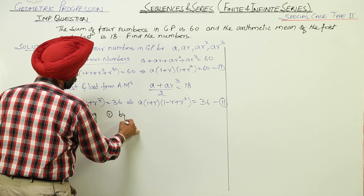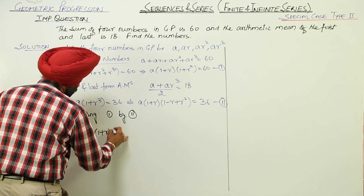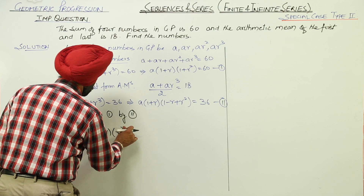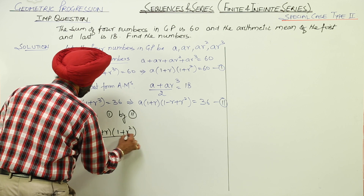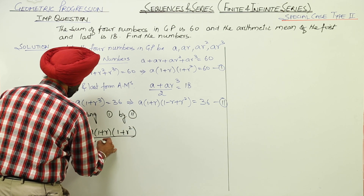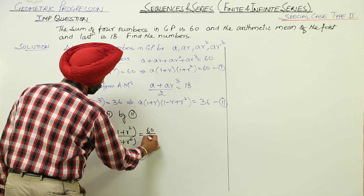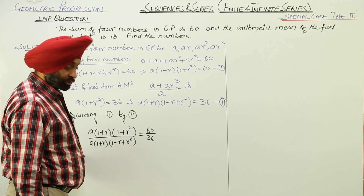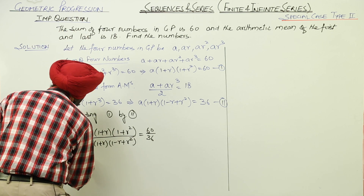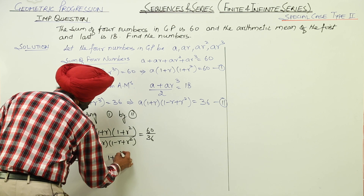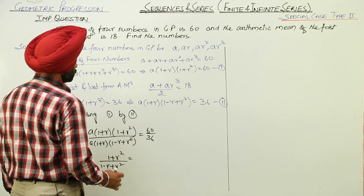Dividing equation 1 by equation 2: a(1 + r)(1 + r²) divided by a(1 + r)(1 - r + r²) equals 60/36. The a and (1 + r) terms cancel, leaving (1 + r²) / (1 - r + r²) = 5/3.